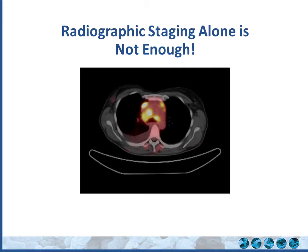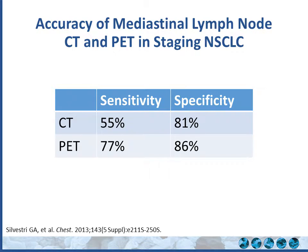But is radiographic staging enough? Are you convinced Carl has stage 3B based on PET alone? Radiographic staging alone is not enough. CT sensitivity for mediastinal staging is 55%, PET is 77%. But specificity is only 81% and 86% respectively — meaning there will be false positives. An active lymph node on PET could be infection, reactive process, or sarcoid. The burden of proof is on us to sample those lymph nodes and prove whether they're involved with cancer.